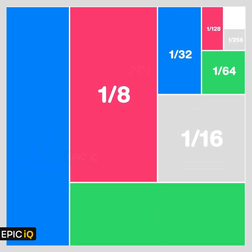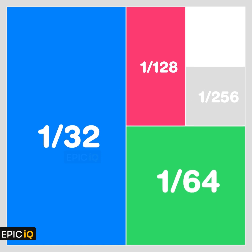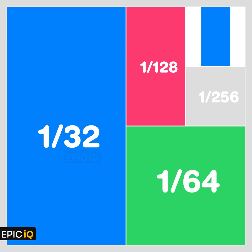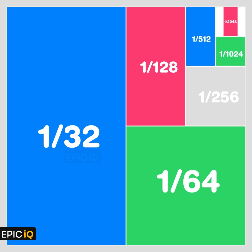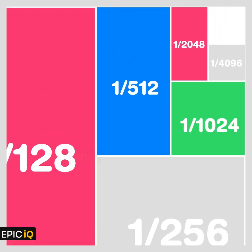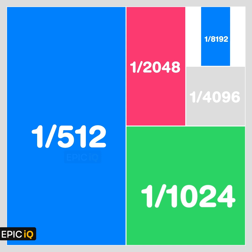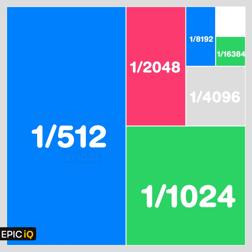Now we zoom in the uncolored white area to check how this sum is behaving at higher terms. The white area is the same as 1 by 256. We color half of it, that is 1 by 512, in blue. We keep coloring the half of the remaining white area, and we keep zooming in the left out white area, which is now 1 by 4096. You would notice that no matter how small the remaining white area is, it is big enough to contain all of the next terms in this infinite series.